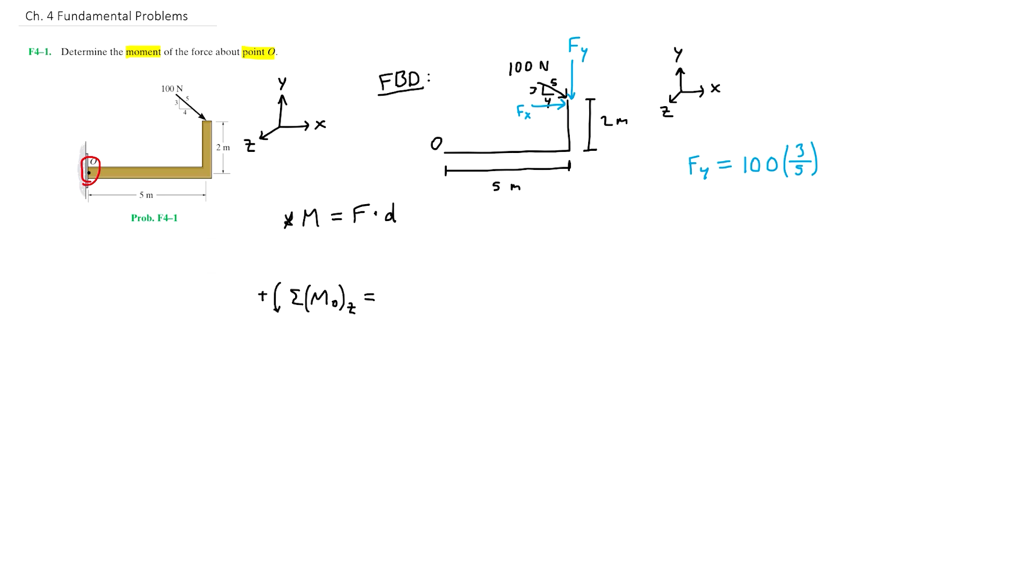Once we know what Fy is, we can now determine the moment about point O due to the force Fy. Using right hand rule from O to Fy, we see that we get a clockwise moment just like so. The distance d here is simply 5 meters. Since this is a clockwise moment, this will result in a negative moment.